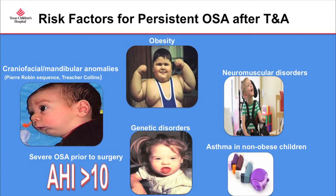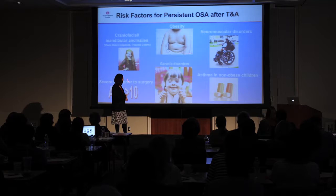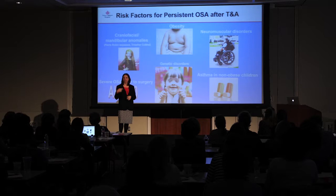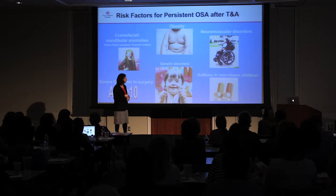Those studies excluded kids with genetic syndromes, neuromuscular disorders, and mandibular anomalies — all at risk for persistent OSA. Obesity is the most common risk factor for persistent OSA after tonsillectomy. Interestingly, non-obese asthmatic children are also at risk. Children with severe OSA pre-operatively — AHI greater than 10 — are at risk of continuing to have obstruction after surgery.